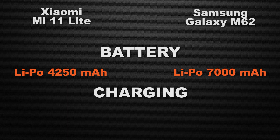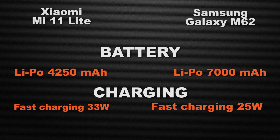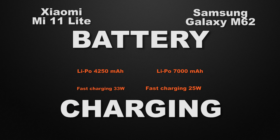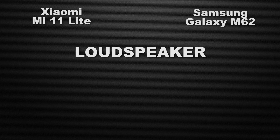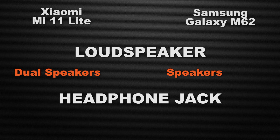For charging speed, the 11 Lite has 33W fast charging while the M62 has 25W fast charging, so the winner here is the 11 Lite as it can charge your device faster. For the loudspeaker, the 11 Lite comes with dual speakers while the M62 has normal speakers — so the 11 Lite wins with immersive sound. For the headphone jack, the 11 Lite does not have one while the M62 does, so the winner here is M62.